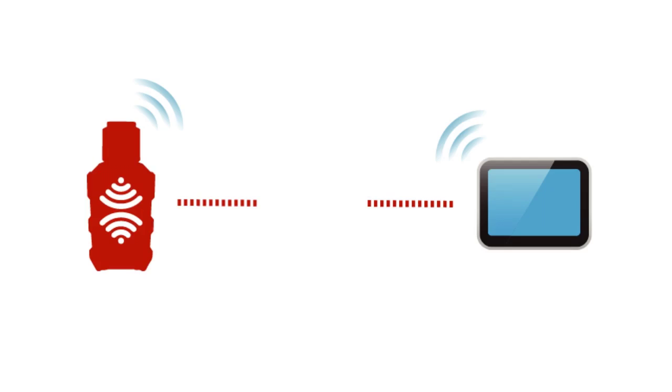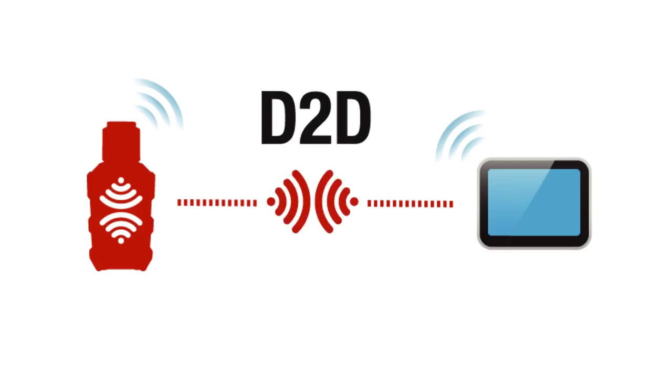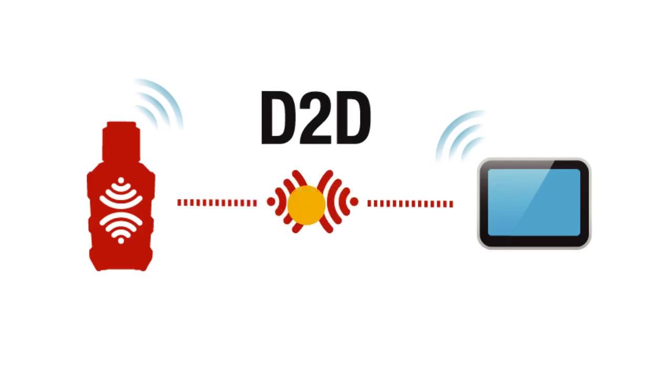In D2D mode, your GS911 Wi-Fi device is a little access point of its own, and hence neither it nor any device that connects to it has any internet access.